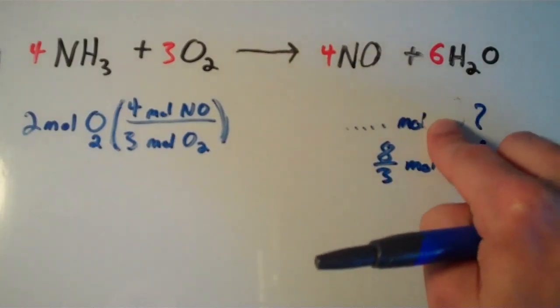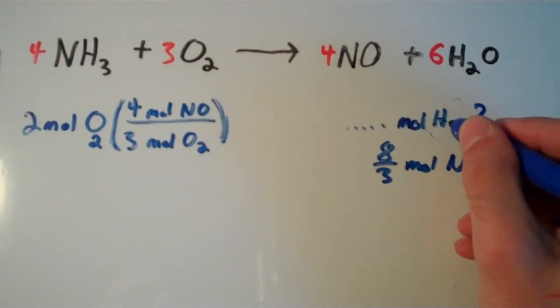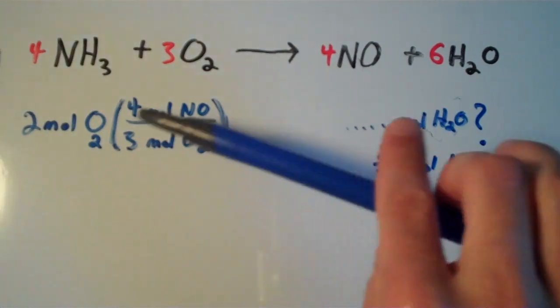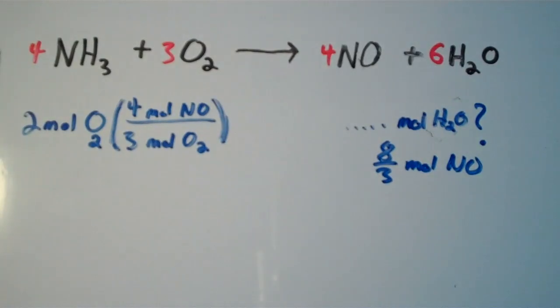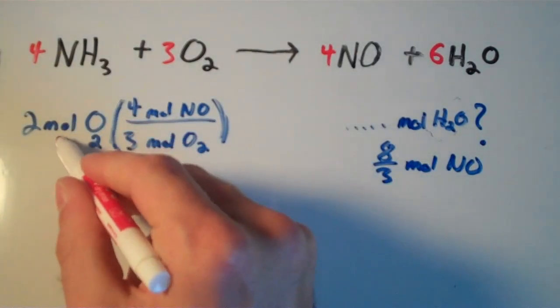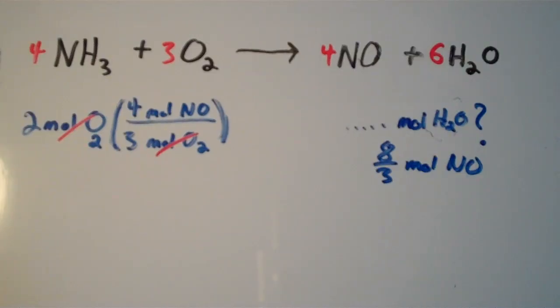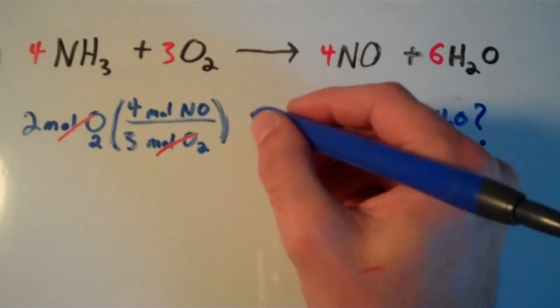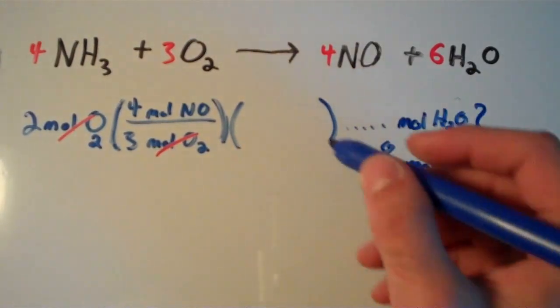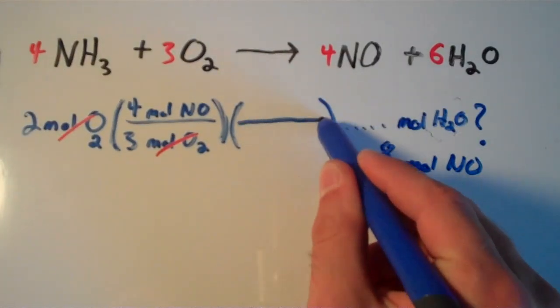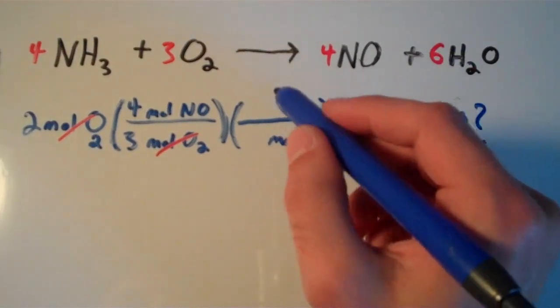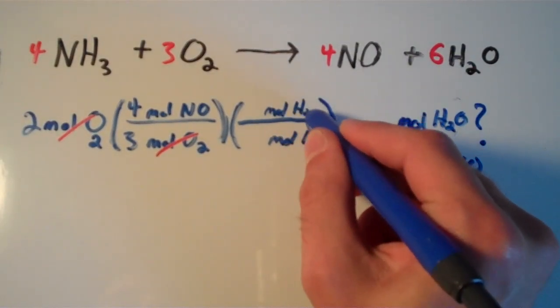Suppose now we wanted the moles of H2O instead of NO. We have moles of NO now because our moles of O2 cancel. We could start with O2 again and set it up all over, but we don't really have to do that. We can use any two of these things and convert away from them. I'm just going to set up a second conversion factor. In this conversion factor, I'm going to put moles of NO on the bottom and moles of H2O on top.